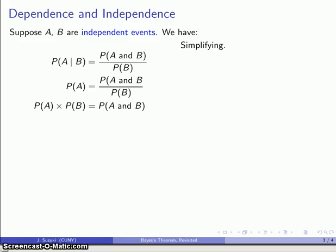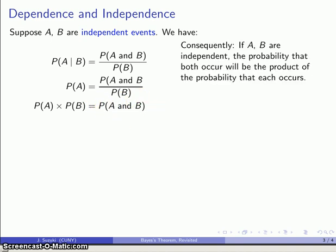And that tells me the probability of A times the probability of B is the probability of A and B both occurring. And so what that tells us is that if I have independent events, then the probability that they both occur is just the product of the probabilities that each occurs individually.